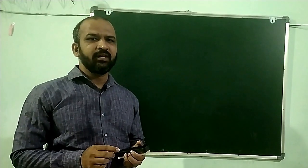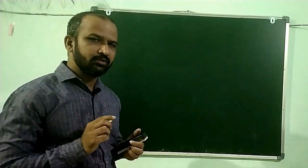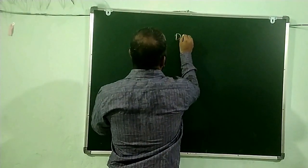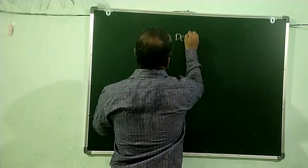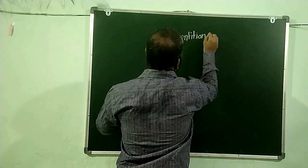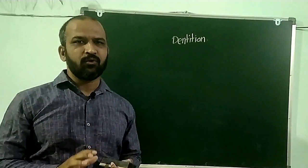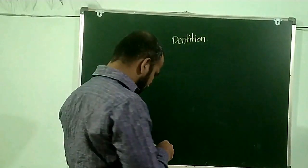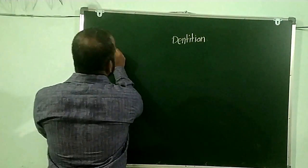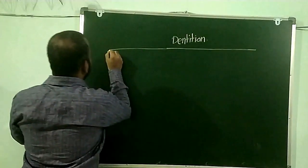Hello friends, today we are going to discuss the dentition and its status. The dentition is defined as the arrangement of teeth on the upper and lower jaw. Three bases are used for classification of dentition. The first basis is size and shape.